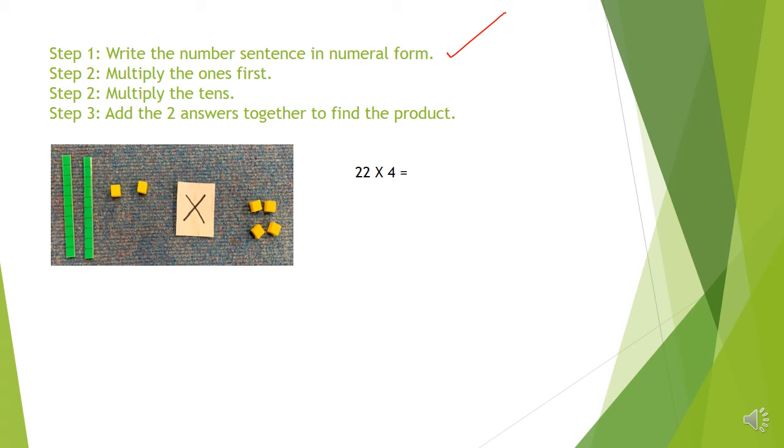The next step is to multiply the ones first. I've got two multiplied by four. Two times four. You can use your four or your two times table here to help you answer this. I'm going to use my fours. Four, eight. The next step, we've done that one.